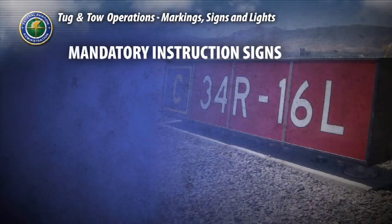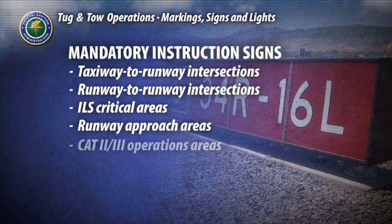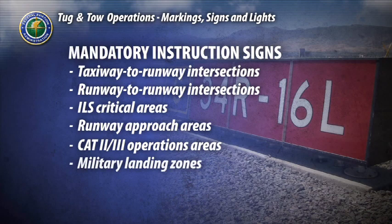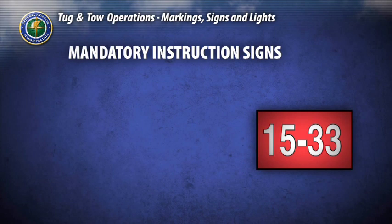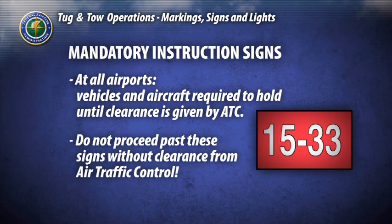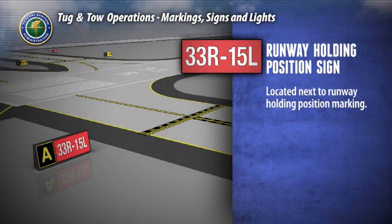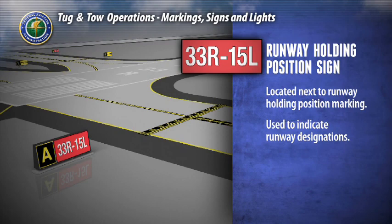Mandatory instruction signs are used to denote taxiway to runway intersections, runway to runway intersections, ILS critical areas, runway approach areas, Cat 2 and Cat 3 operation areas, military landing zones, and no entry areas. These signs have white inscriptions on a red background outlined in black. At all airports, vehicles and aircraft are required to hold at these signs until clearance is given by air traffic control. It is critical that you do not proceed past these signs without clearance. The runway holding position sign is located next to the holding position markings on taxiways or runway intersections and is used to indicate the runway designations.